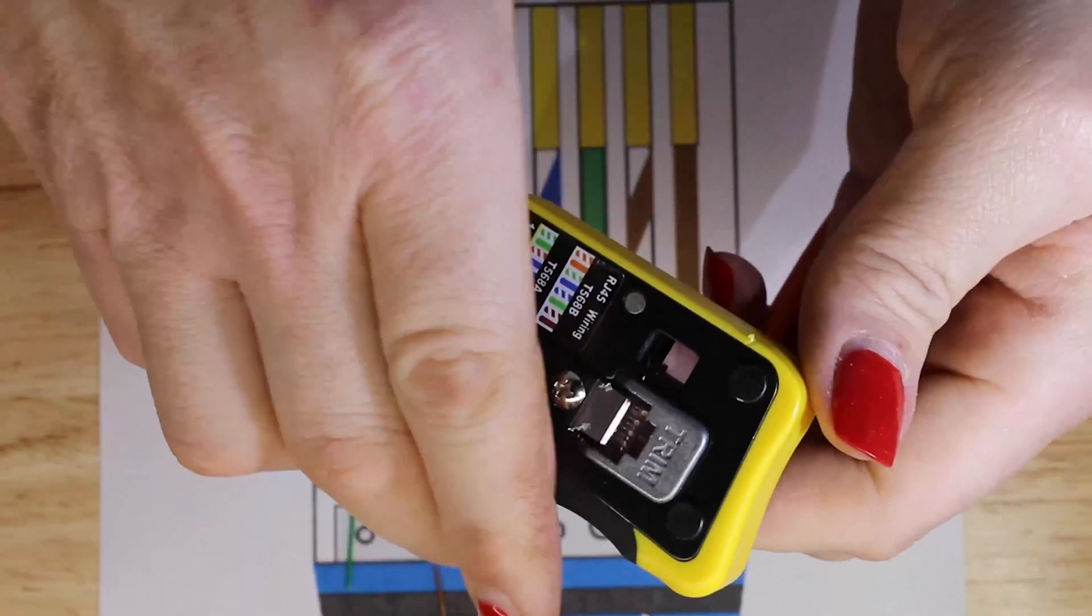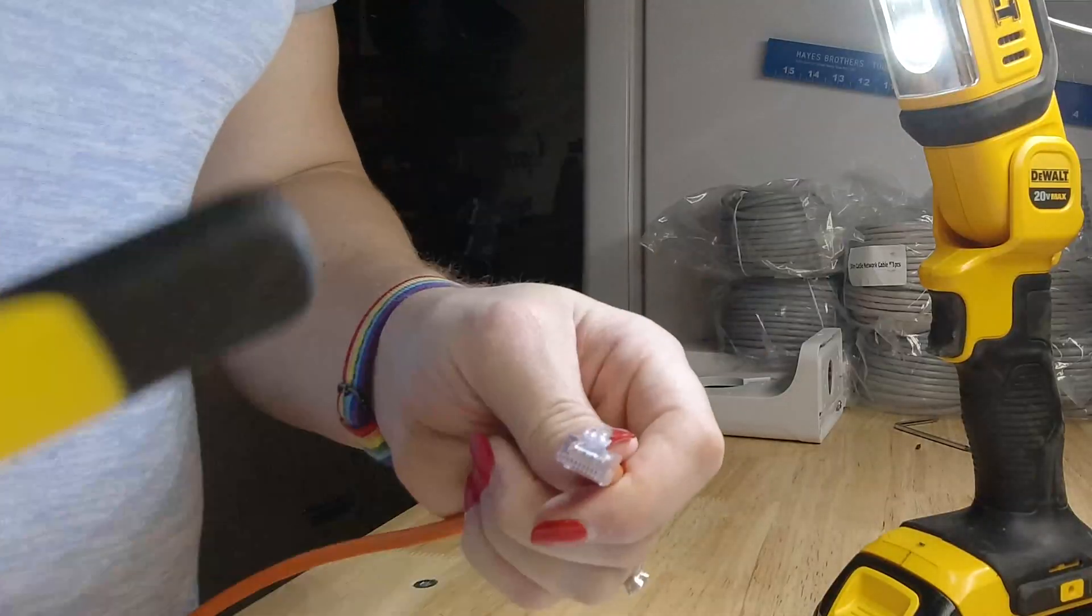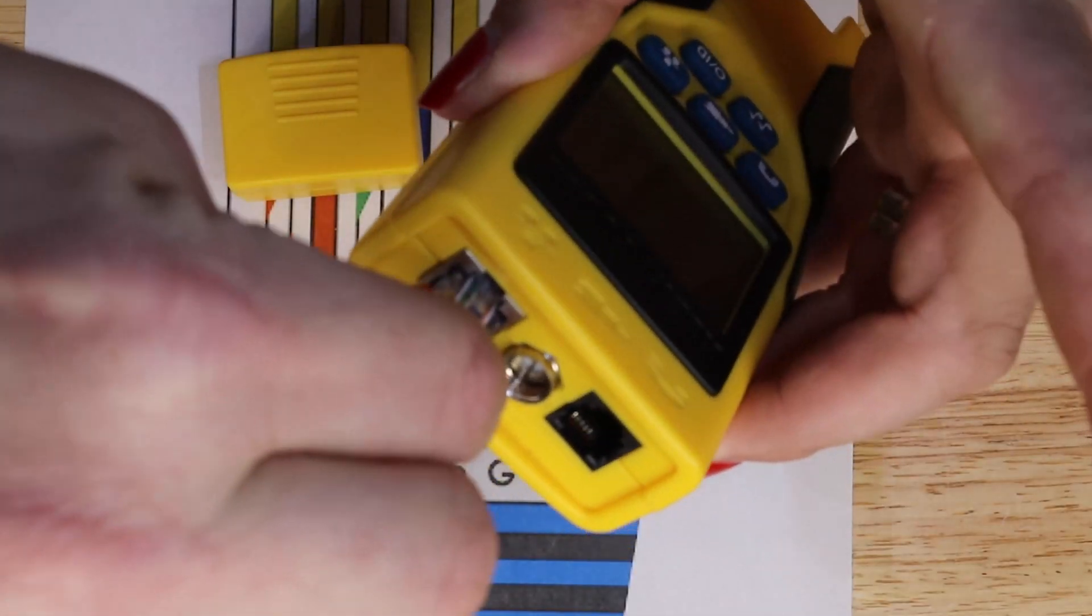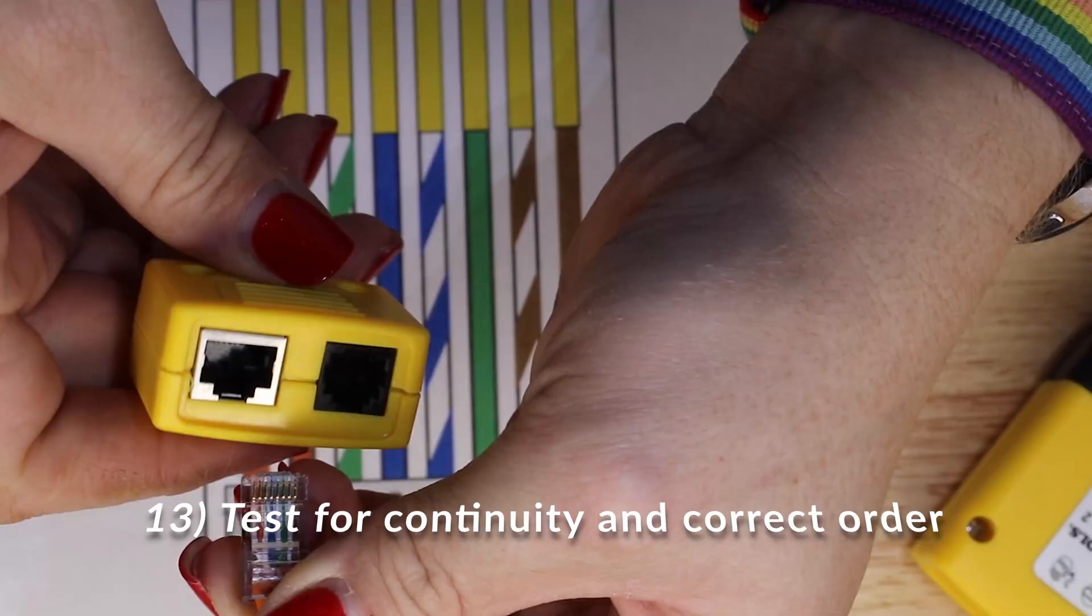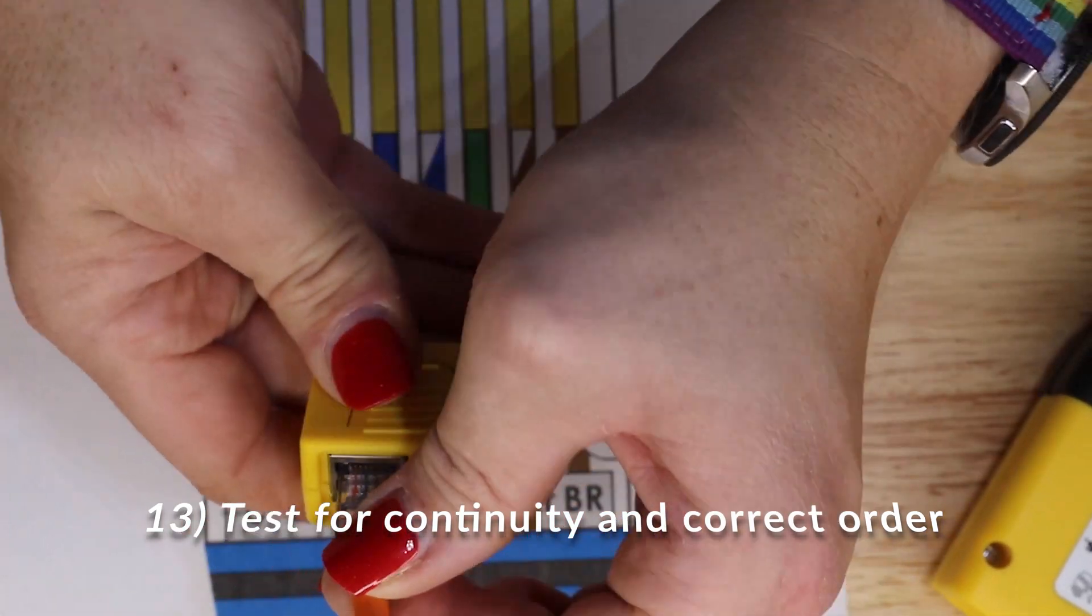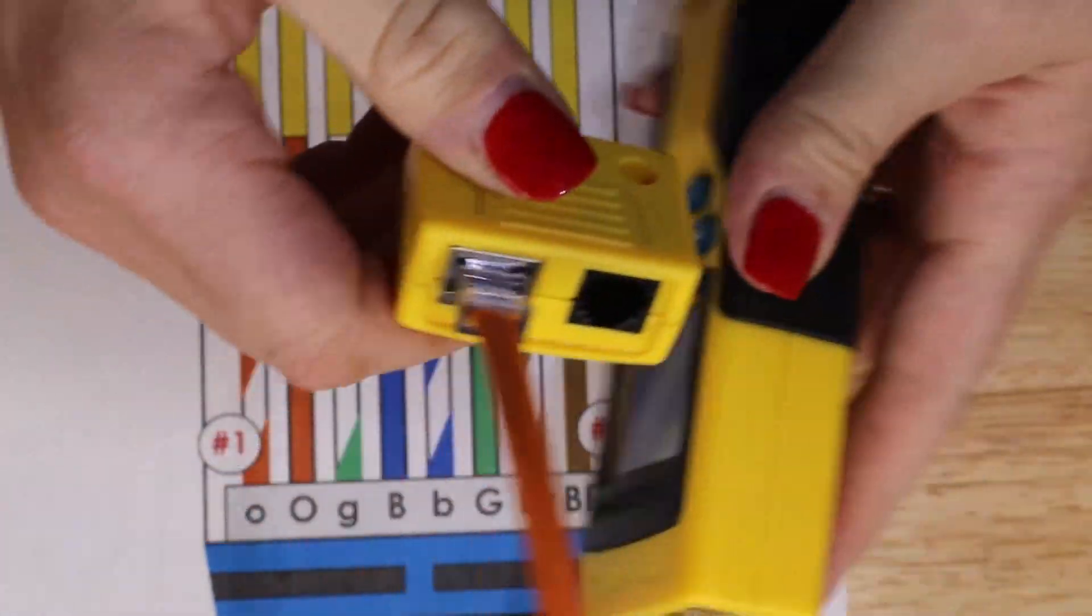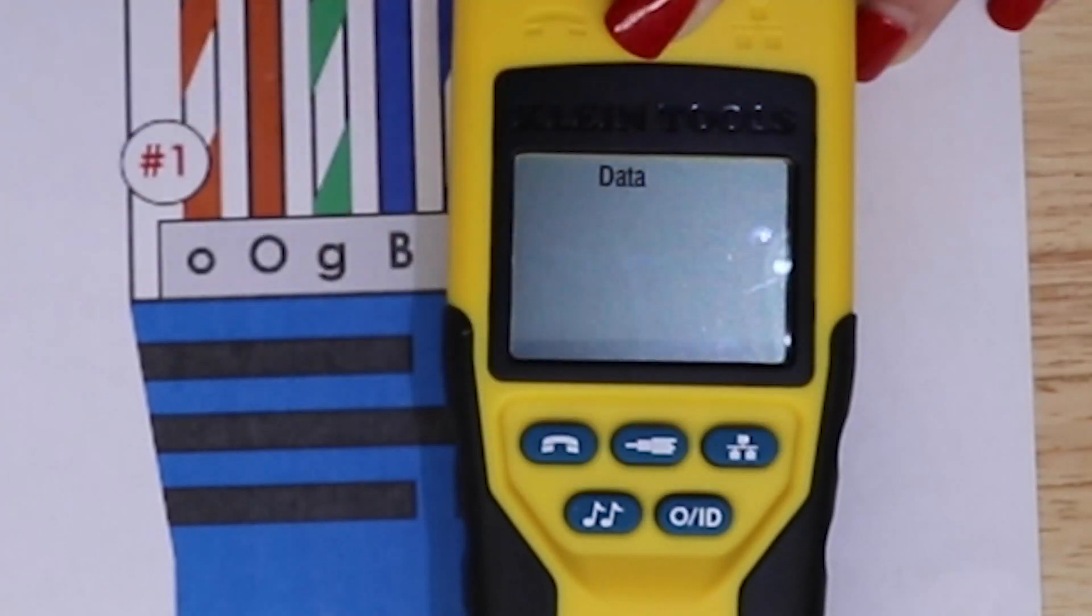Now that you've got a good tight crimp and you've got all of your ends cut off the plug flush, next you're going to want to take a tester and test both ends of the cable to make sure that the continuity is good across the cable and that you've got connectivity across all eight pins correctly.